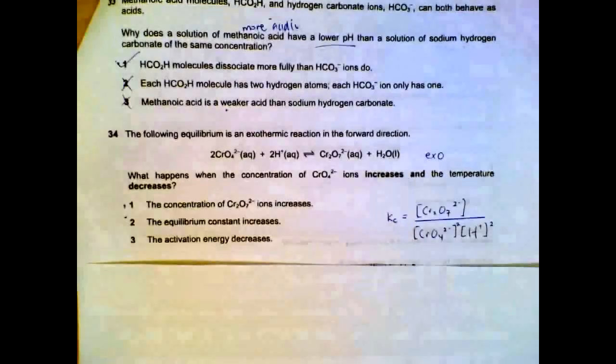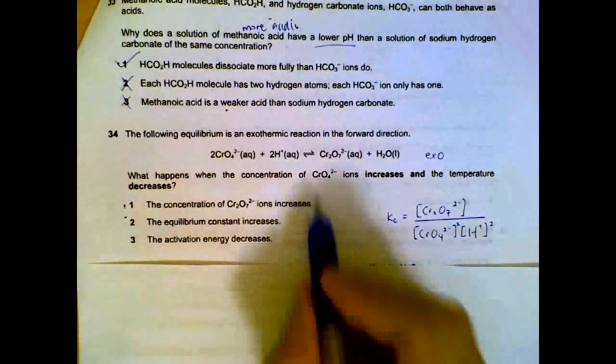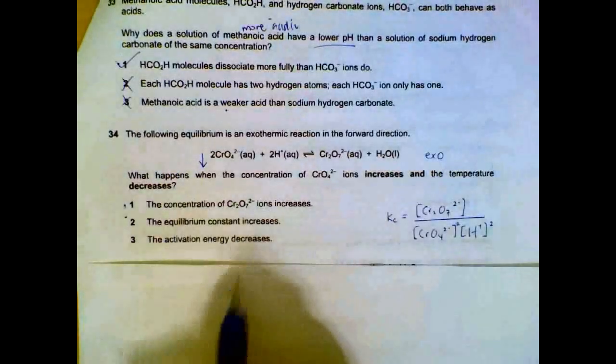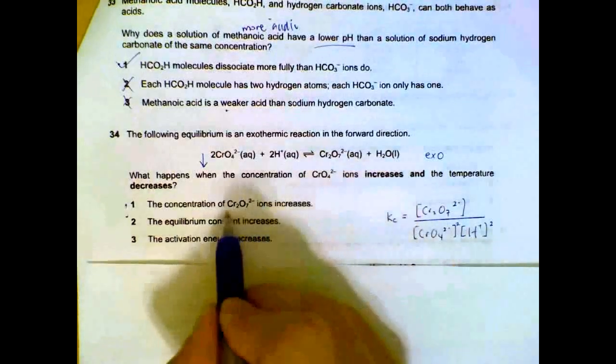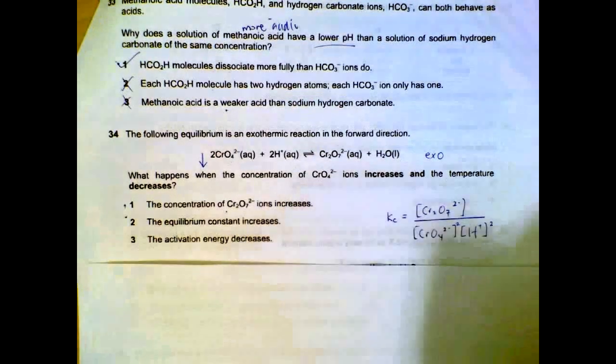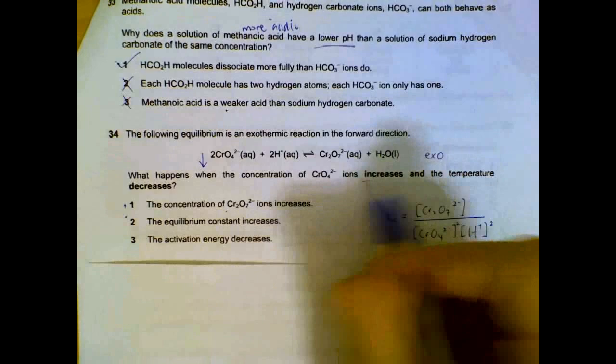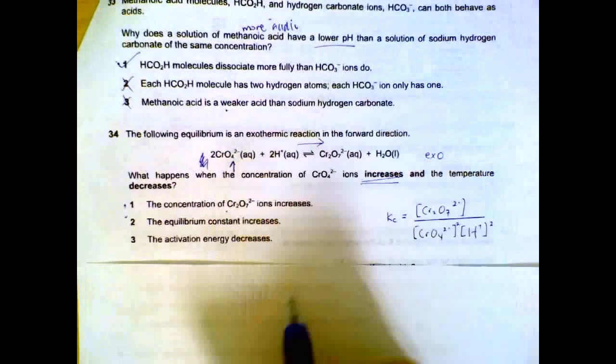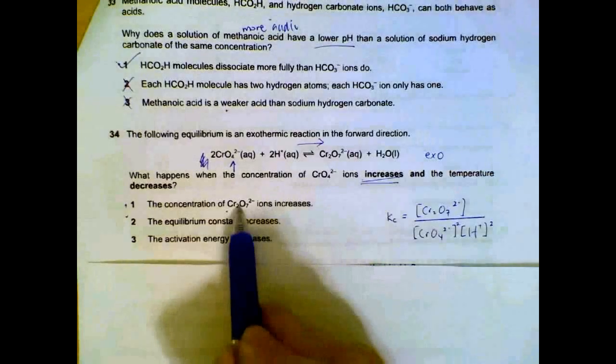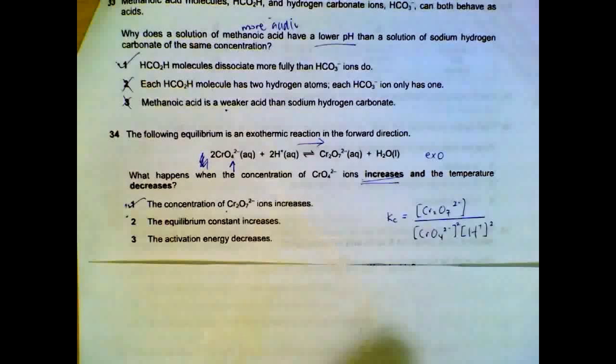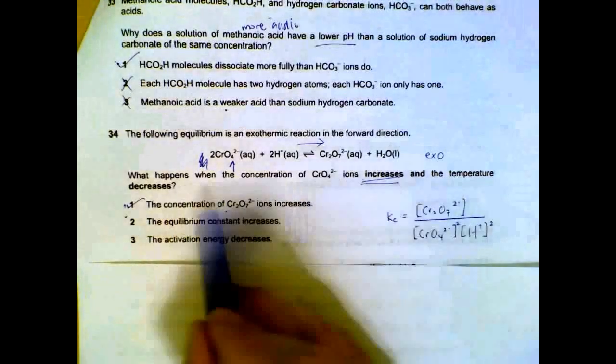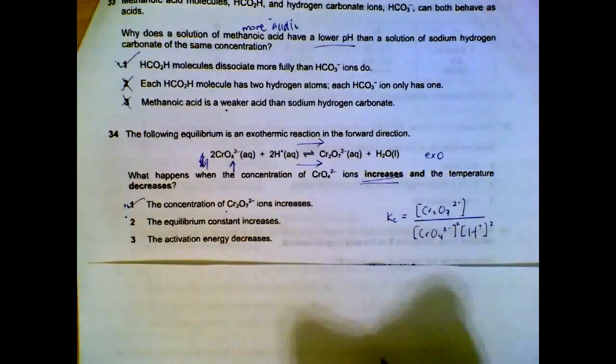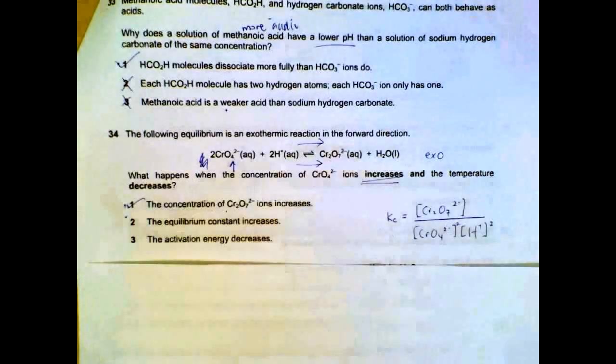Question 34. What happens when concentration of CrO4 2- ions decreases and the temperature decreases? Let's check if the concentration of Cr2O7 2- increases. When this increases, equilibrium will shift to the right side, so it will increase your concentration of Cr2O7 2-. Temperature decreases. Since it's an exothermic reaction, when temperature decreases, again the equilibrium will shift to the right. So statement 1 is correct on both accounts.